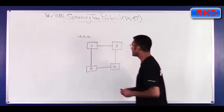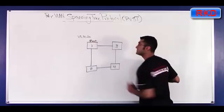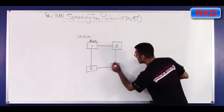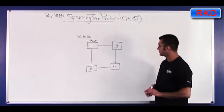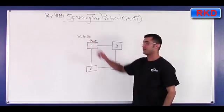what would happen is this port may be, and let's say this is the root for both VLANs, this port would become blocking, which means this link would go unused for both VLAN 10 and 20.